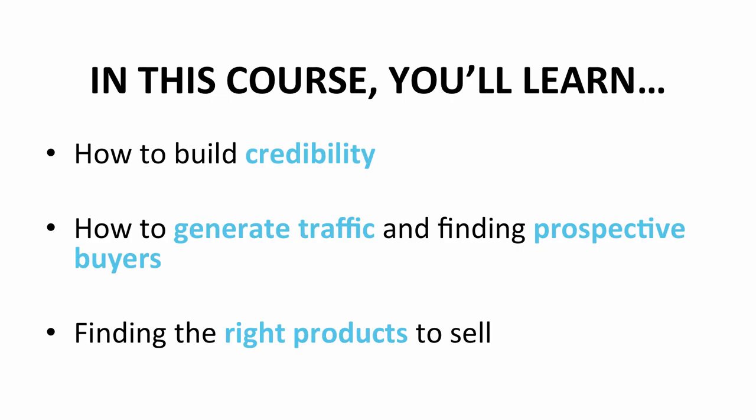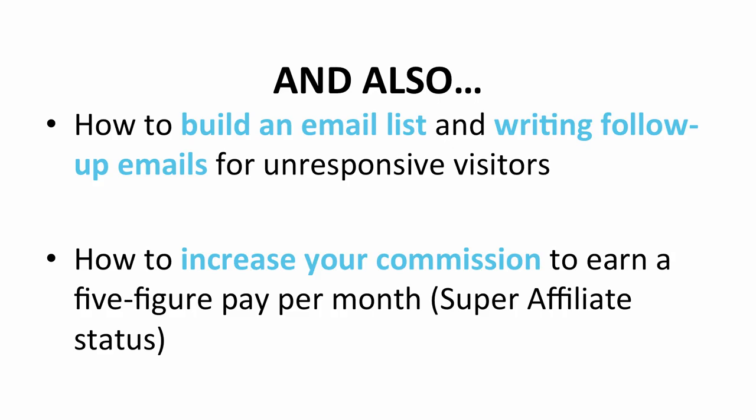For purchasing the Affiliate Payout Machine, you will know how to avoid ending up like the unsuccessful affiliate novices. In this course, you will learn how to build credibility to win the trust of your prospective subscribers, how to generate traffic and find prospective buyers to boost your sales, and find the right products to sell — products that are able to make a high number of sales and also provide a high commission rate. How to build an email list, which is a vital part in building an affiliate business. Also, writing follow-up emails to be sent to those in the email list. Last but not least, how to increase your commission to earn a five-figure pay per month and become a super affiliate.